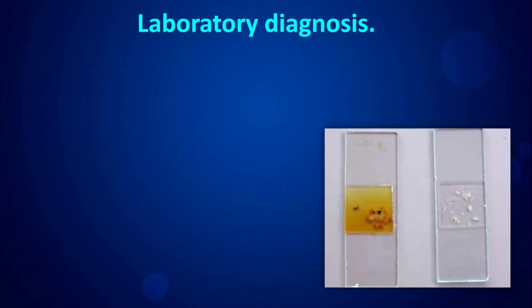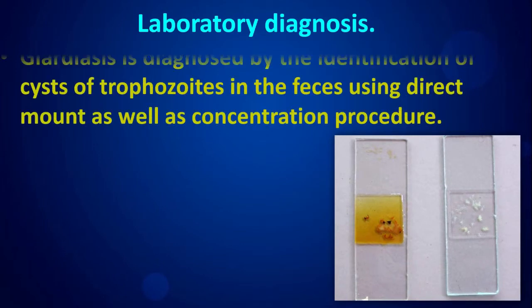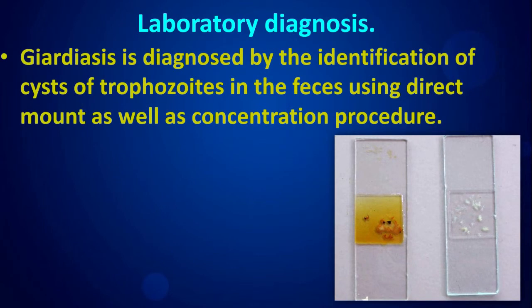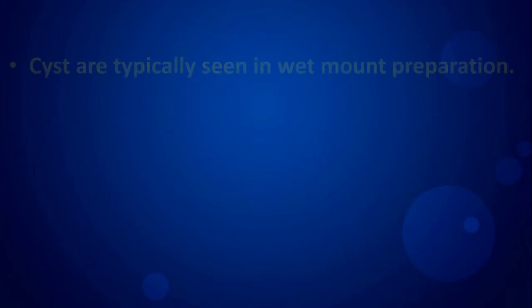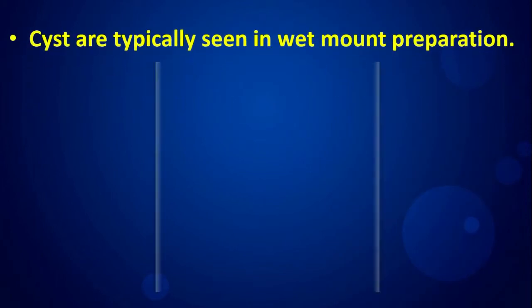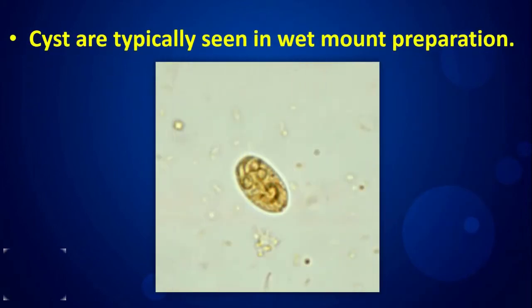Laboratory diagnosis: giardiasis is diagnosed by identification of cysts or trophozoites in the feces using direct mount as well as concentration procedures. Cysts are typically seen in wet mount preparation.